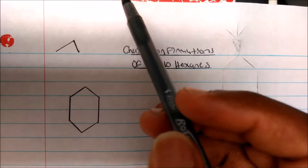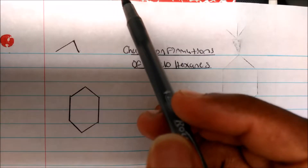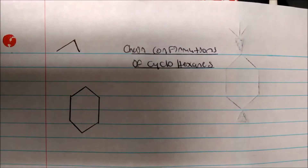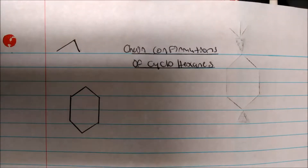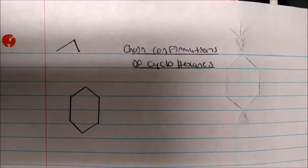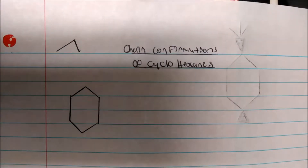Cyclohexane would rather have a perfect 109.5 degree bond angles. So what it does is adopt the chair conformation to satisfy those preferred bond angles. The flat ring doesn't cut it because we have what is called ring strain, which is bad. It is caused by bond angles being forced — like cyclopropane being forced. So they adopt what is called chair conformation.